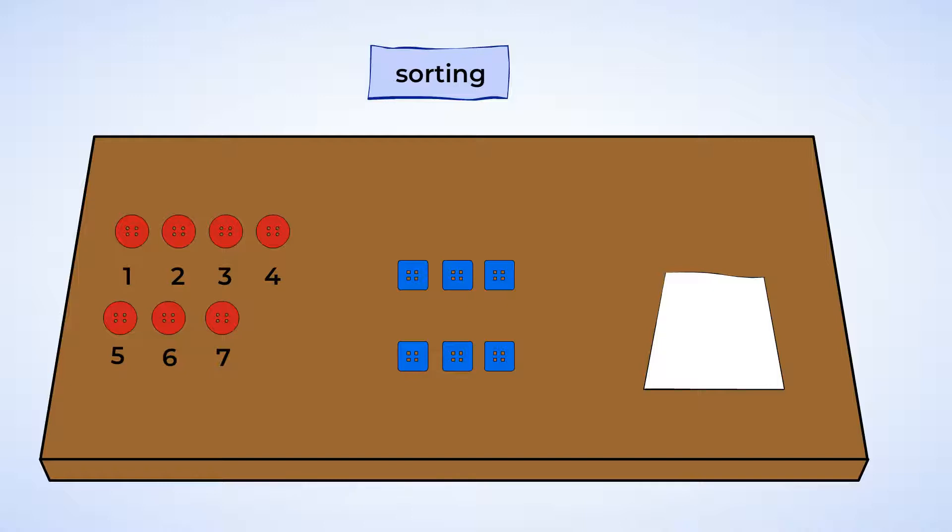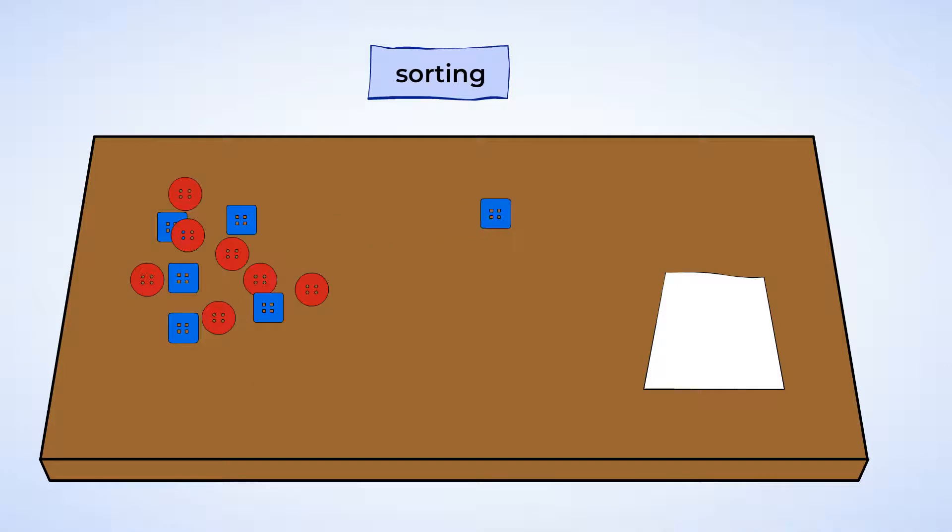Well, how about sorting them by shape? Look, here's a square button. We could put that one in a pile. And here's a circle button. So we could make another pile of circle buttons. So we could sort the buttons in different ways. By color or by shape.